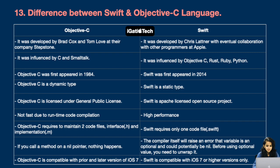If you call a method on a nil pointer in Objective-C, nothing happens. In Swift, the compiler itself will raise an error that the variable is optional and could potentially be nil — before using an optional value you need to unwrap it. Objective-C is compatible with iOS 7 and prior versions, whereas Swift is compatible with iOS 7 or higher versions only. This is the most important question you may face in your interview.